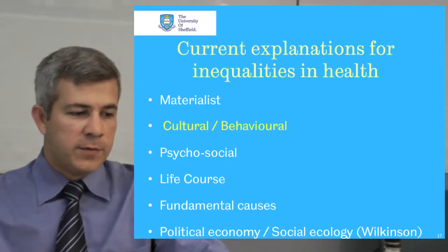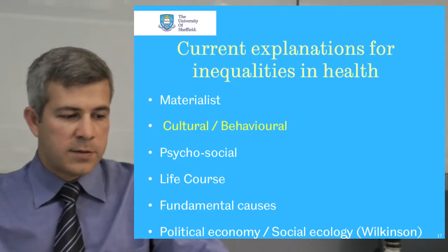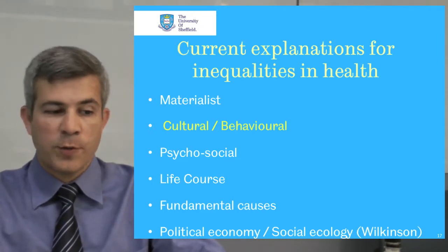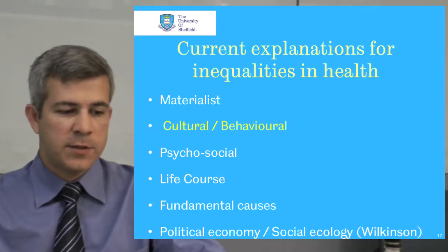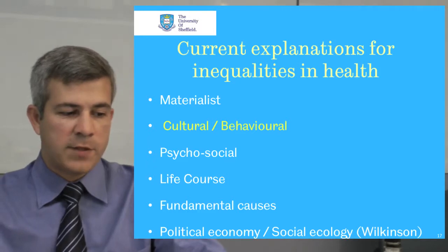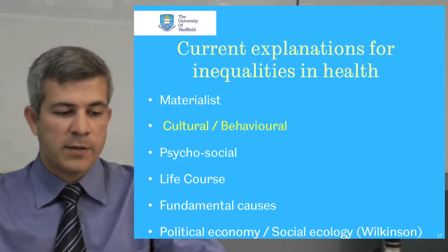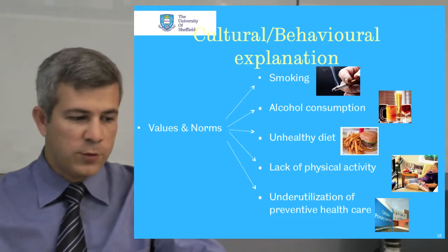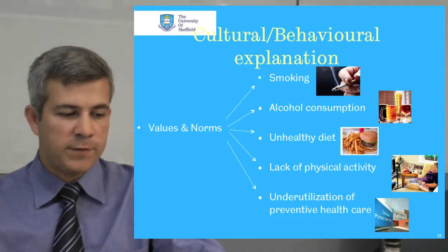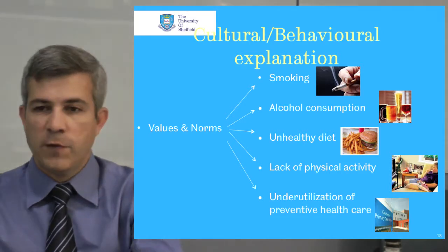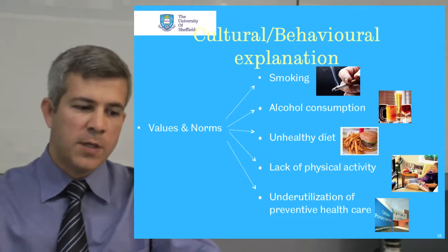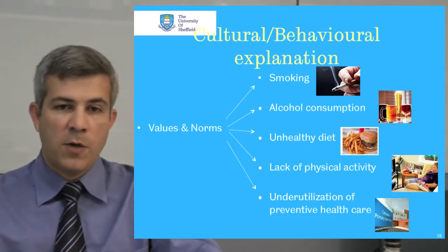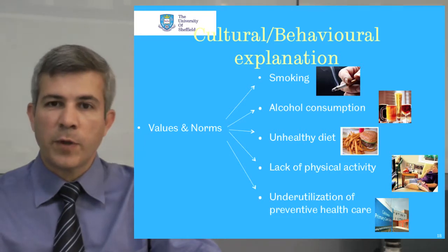The cultural and behavioral explanation argues that differences in norms and values lead people from lower socioeconomic status groups to adopt risk behaviors such as smoking, unhealthy diet, lack of physical activity, and underutilization of preventive health care, resulting in poor health. According to this explanation, people from different socioeconomic groups adopt different behaviors and voluntary lifestyles. It focuses on the individual rather than groups and suggests that unthinking, reckless, or irresponsible behavior is a determinant of poor health among the poor.